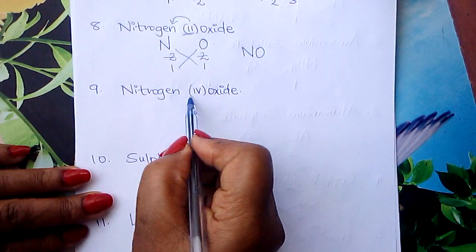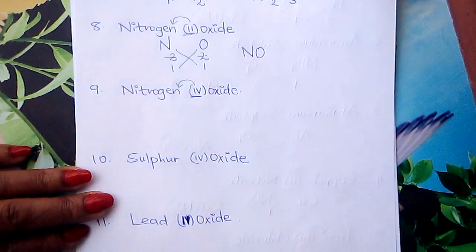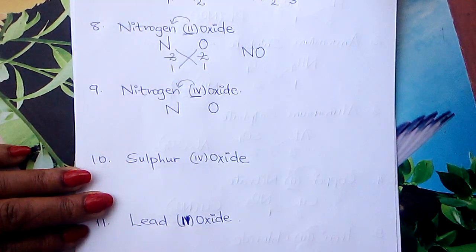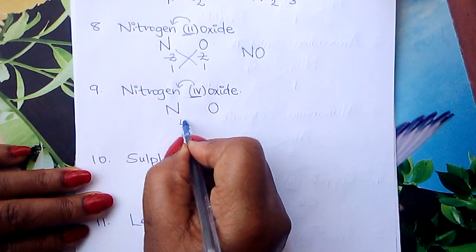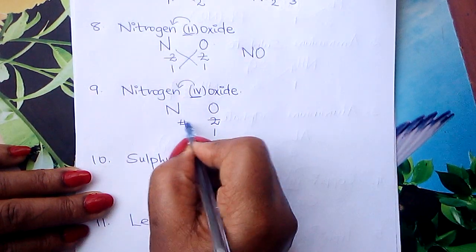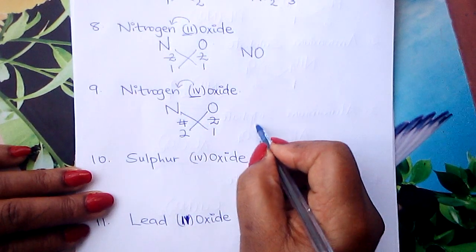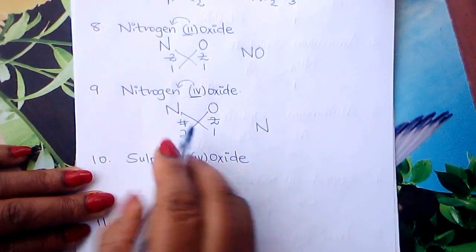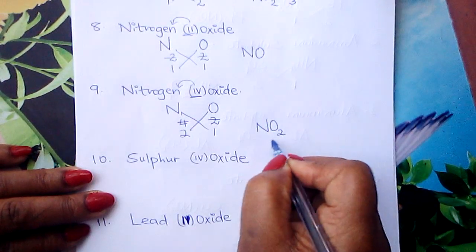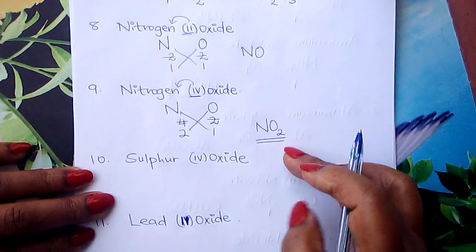We go to nitrogen(IV) oxide. Nitrogen symbol is N, oxygen symbol is O. Valency of nitrogen is 4, valency of oxygen is 2. Divide by 2: 2 and 1. Interchange: N takes 1, O takes 2. This is the formula of nitrogen(IV) oxide: NO₂.